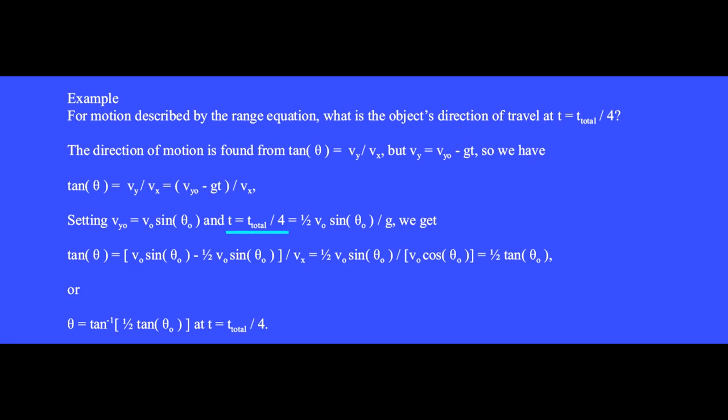This is the y component of the initial launch velocity, which we set to v₀ sin(θ₀). And we set this t to be t_total over 4. A couple of minutes ago, we decided that t_total was 2 v₀ sin(θ₀) over g. So we get tan(θ) is v₀ sin(θ₀) minus a half of v₀ sin(θ₀). These two quantities are the same. We factor out 1 minus a half to get this half over here. Now we have 1 half v₀ sin(θ₀) divided by v_x, which is v₀ cos(θ₀). But this sine divided by this cosine is a tan. The v₀'s cancel. So we have tan(θ) equals 1 half tan(θ₀) when 1 quarter of the total flight time has occurred.